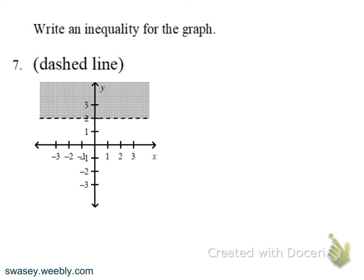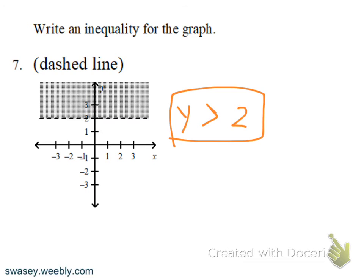Now we're writing the inequality that matches a given graph. The dashed line is y equals 2. We're shaded above and it's dashed, so we don't include 'or equal to.' Therefore, the inequality is y greater than 2 — a horizontal dashed line at 2 shaded above.